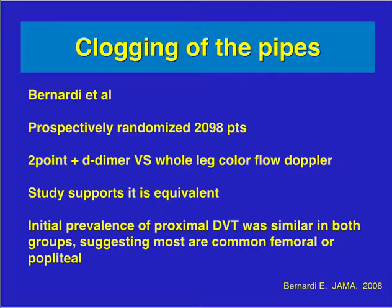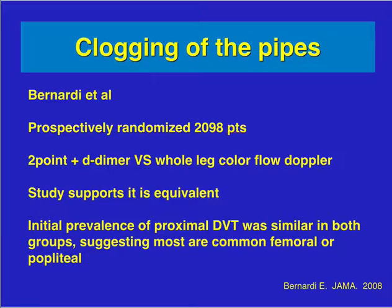A study by Bernetti and others showed that a two-point compression plus D-dimer was just as good as whole-leg color flow Doppler. We use a three-point approach: the common femoral vein, the greater saphenous takeoff, the deep and superficial femoral takeoff, and the popliteal. The proximal femoral vein is evaluated just below the inguinal ligament, scanning continues down to the bifurcation, and the second area is the popliteal fossa.